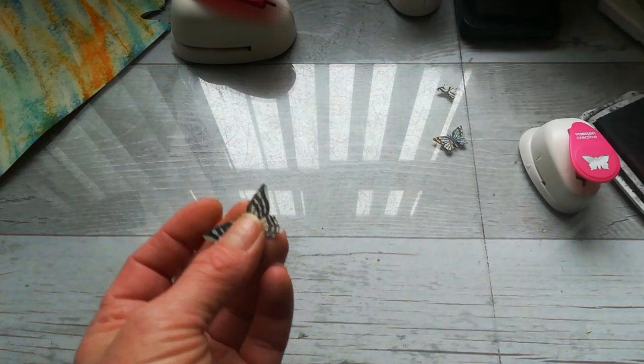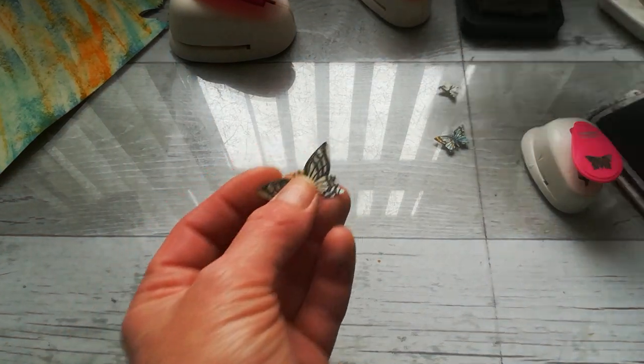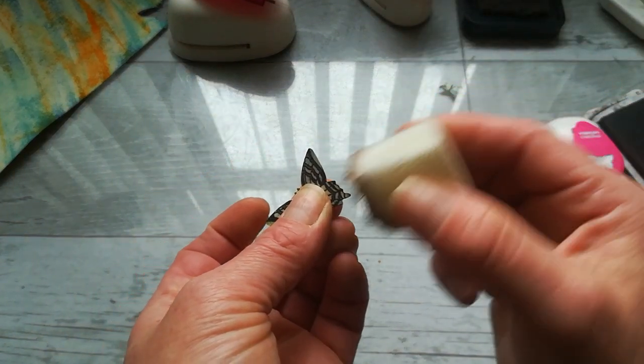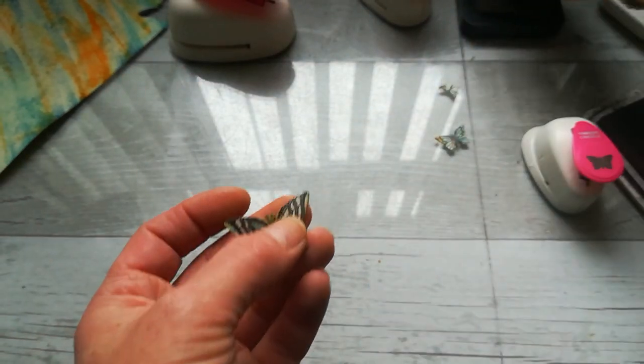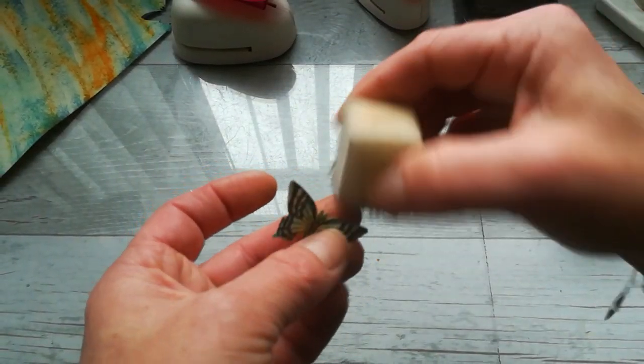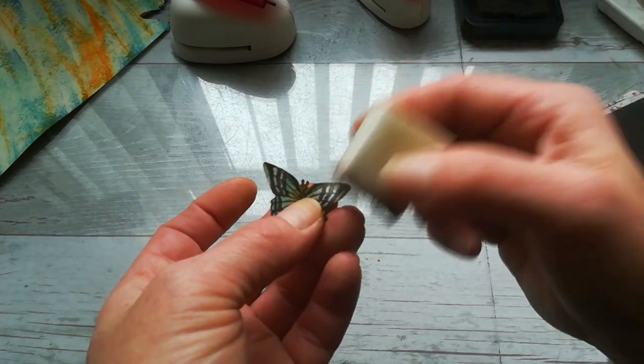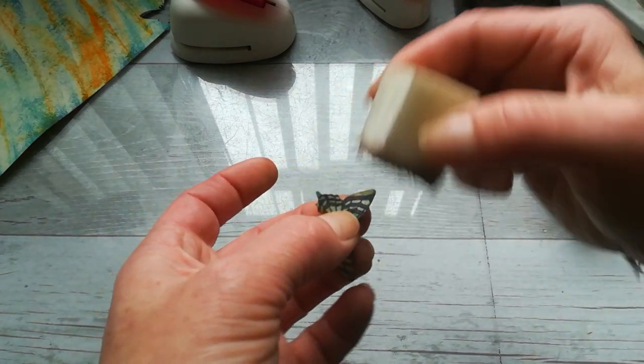I'm gonna do it this way. It looks like this. And if you wanna make it totally amazing, I'm using Walnut Stain distress ink and I'm just gonna go over the edges.